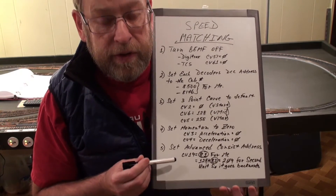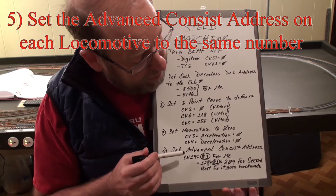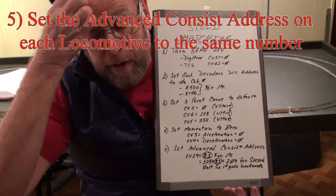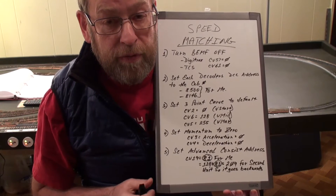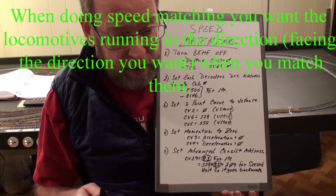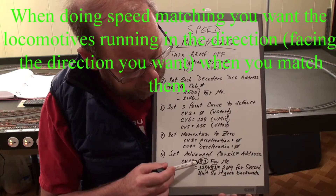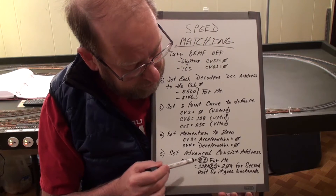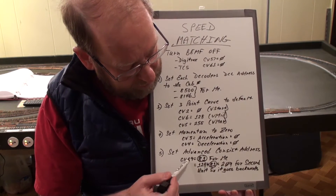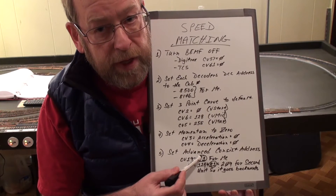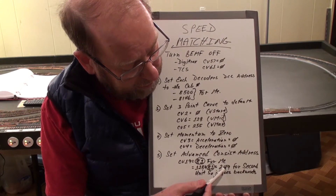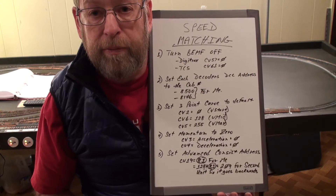Finally, I want to set the advanced consisting address, which is CV19, to 81. But for my second locomotive, I want it to run back-to-front so it runs in the opposite direction. To do that, I add 128 to the consist number, giving me 209. So I'll set CV19 in the lead locomotive to 81, and CV19 in the trailing locomotive to 209, and then they'll run in the proper direction.